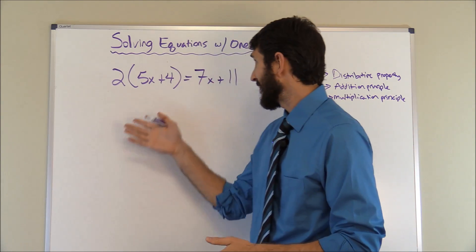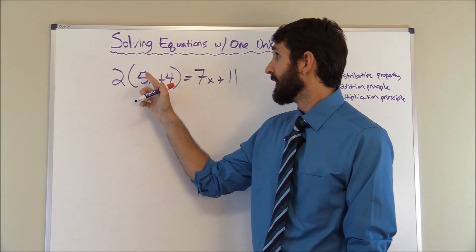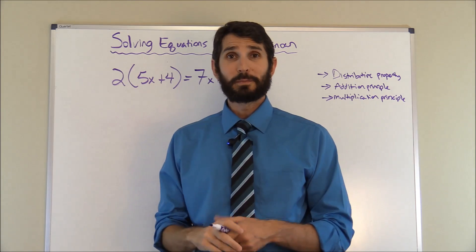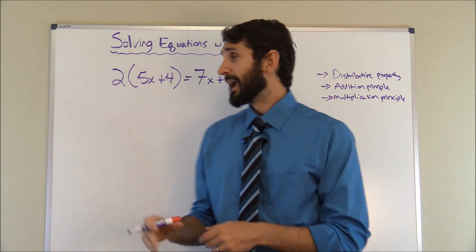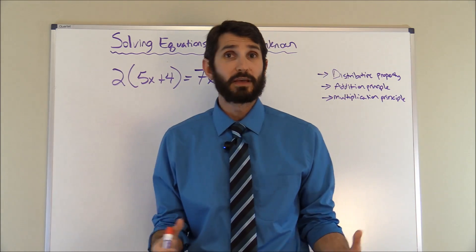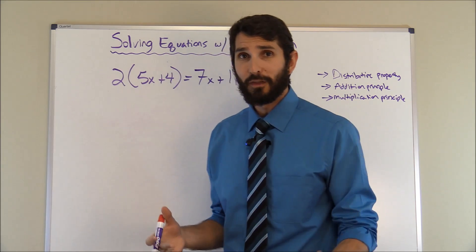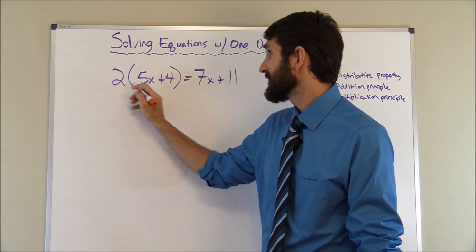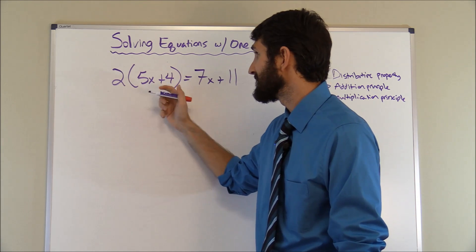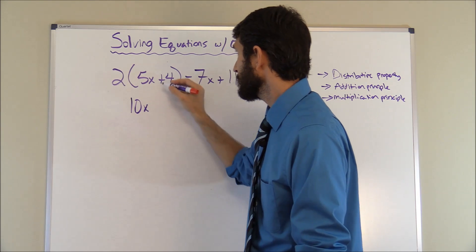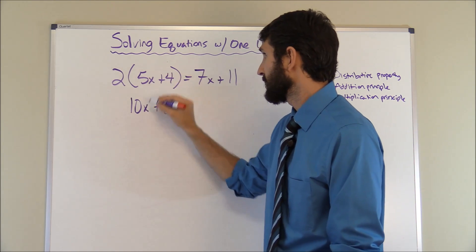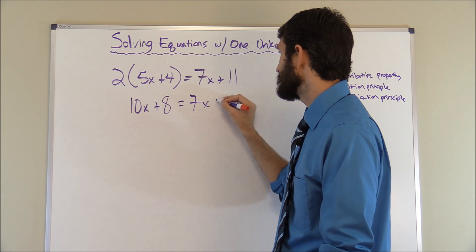Now let's work another equation. This one looks more complicated: two times five X plus four in parentheses equals seven X plus eleven. It looks complicated, but it's not going to be that bad. The first thing we want to do is get rid of the parentheses using the distributive property — multiply two times five X to get ten X, then two times four to get eight. So it turns into ten X plus eight equals seven X plus eleven.